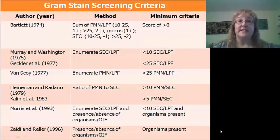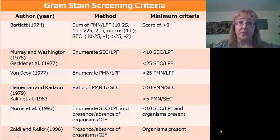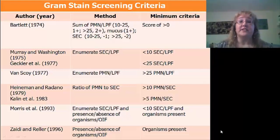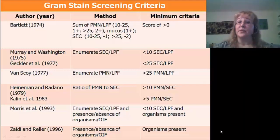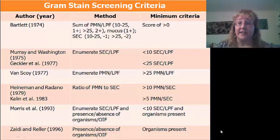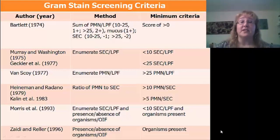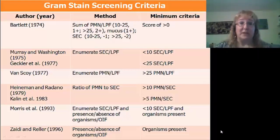Based on the literature, there are several available gram stain screening criteria — it really doesn't make any difference which one your lab chooses to use; the important thing is to choose one and use it. Many laboratories use the number of squamous epithelial cells per low power field, either less than or equal to 10 or less than or equal to 25, as a sign of specimen acceptability. Some laboratories use the ratio of neutrophils to squamous cells, and some use the absence or presence of organisms per oil immersion field.